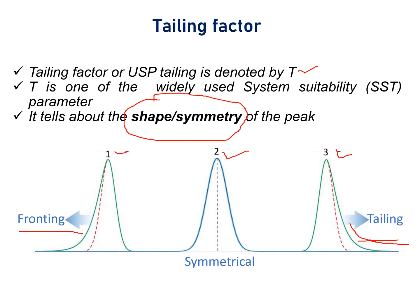Now coming to peak 2. Peak 2 is symmetrical and such a type of peak is called an ideal peak.